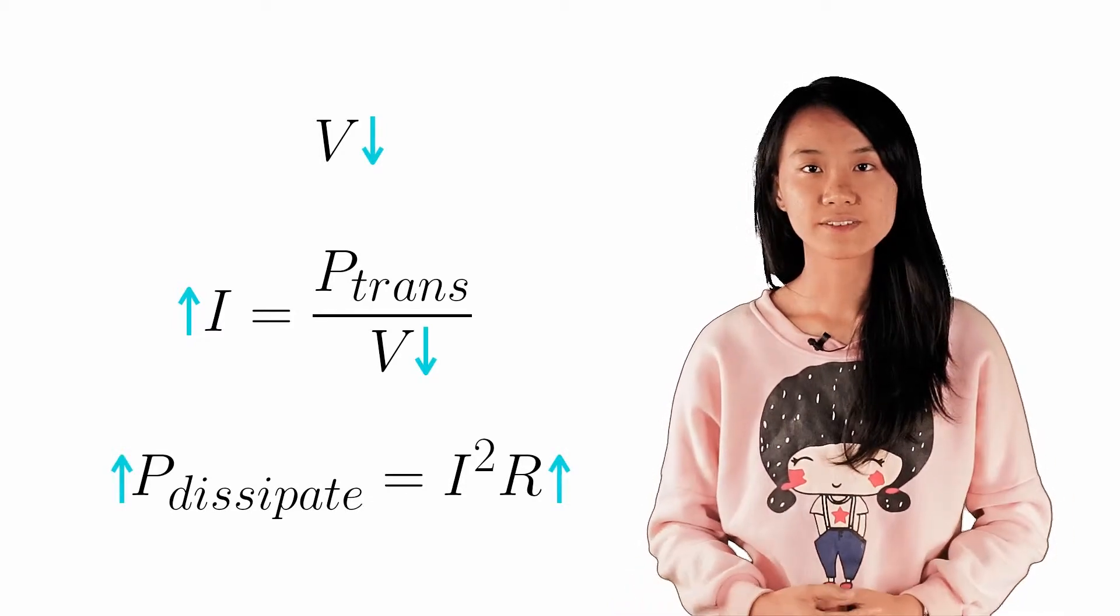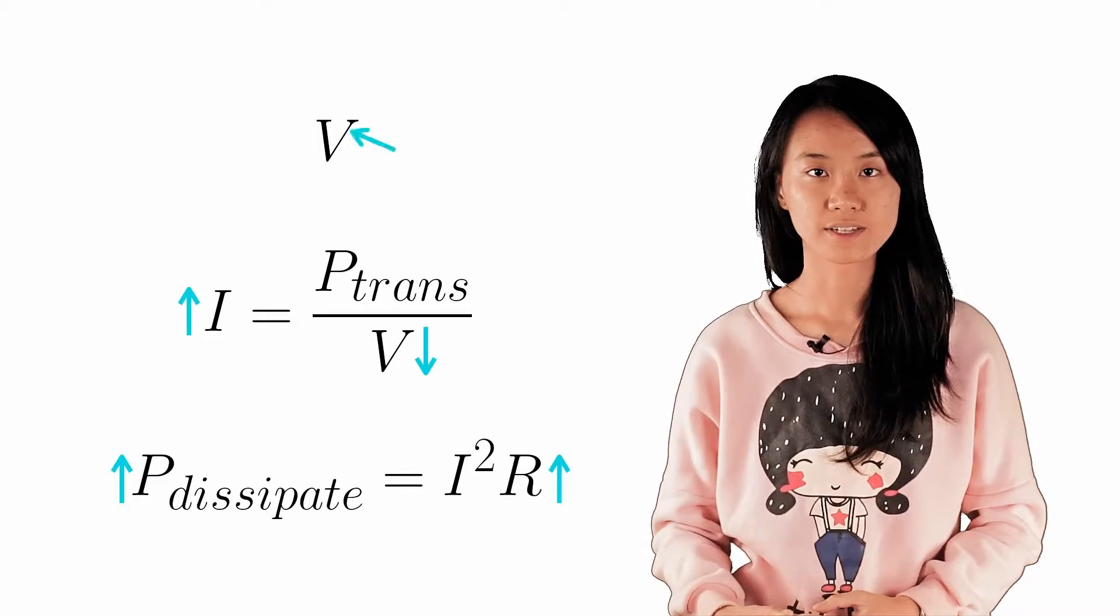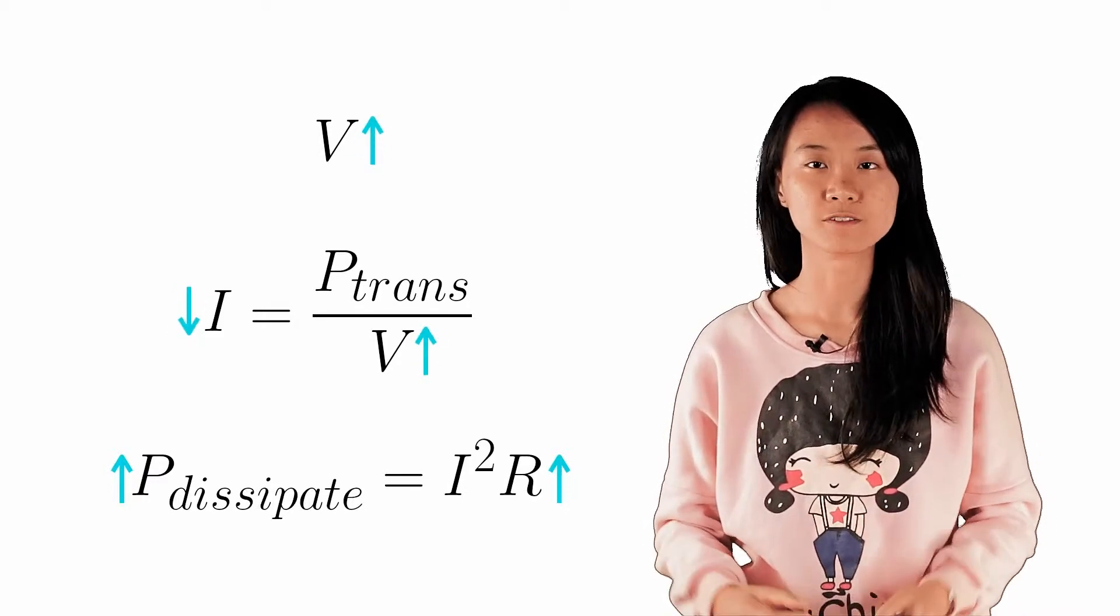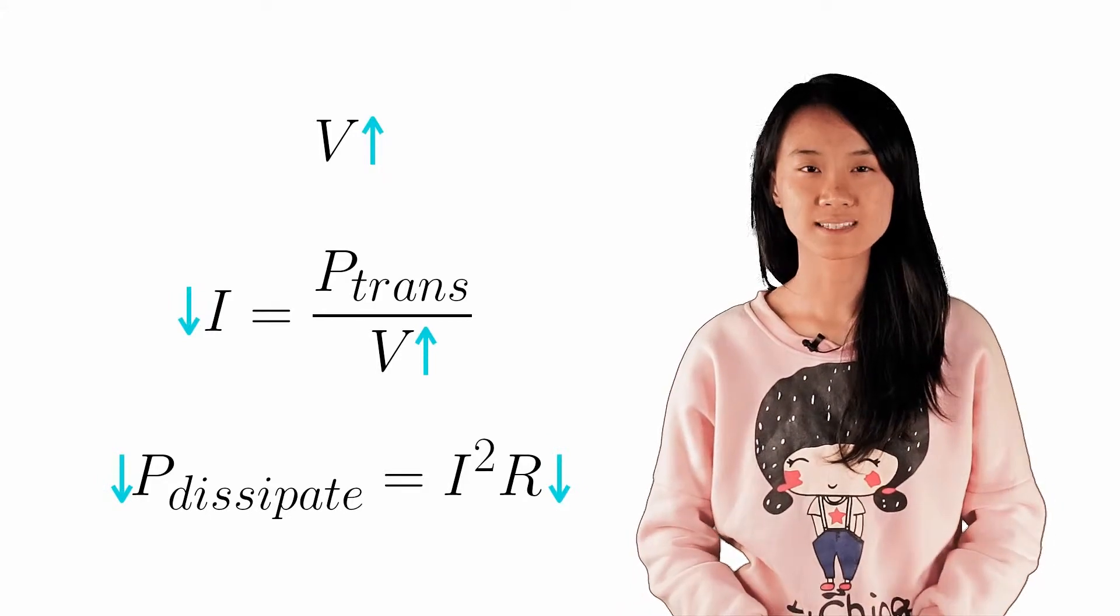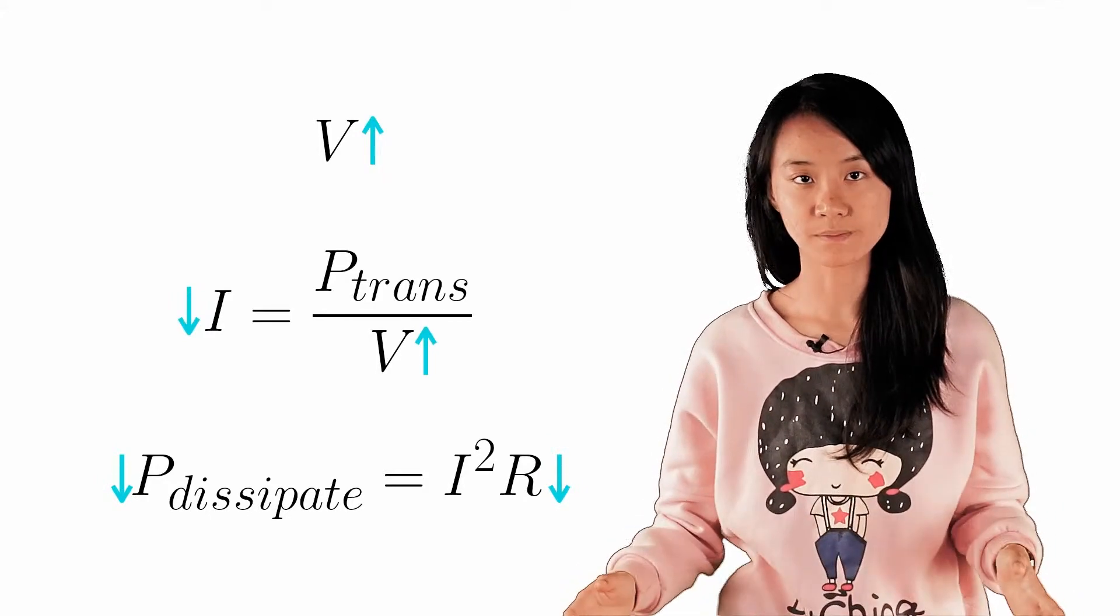Alternatively, if you choose to use a higher voltage, the current will be smaller and thus the power dissipated will be smaller as well. Hence, high voltage transmission minimises power loss across long distance cables.